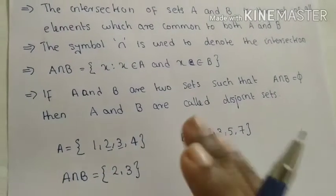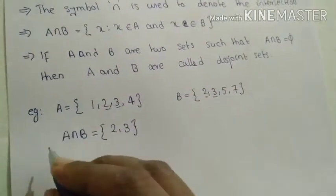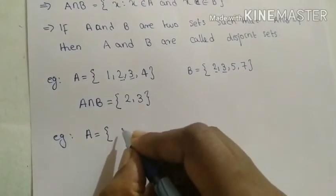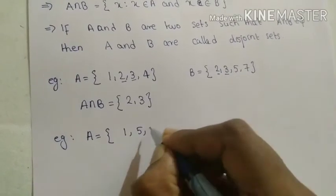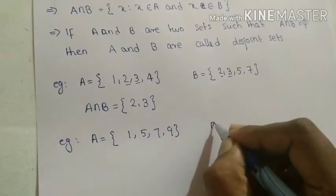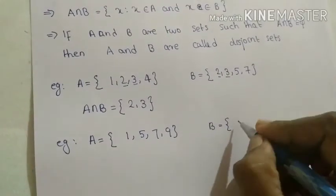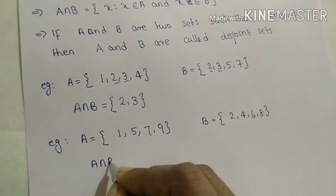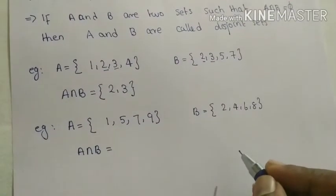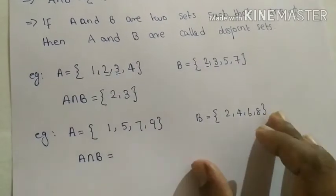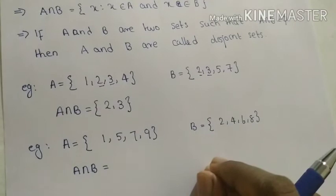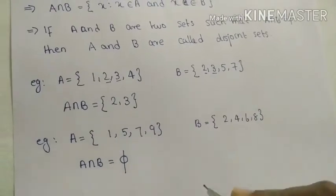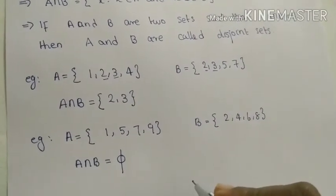That is one example. Now consider another example. Let A equal to {1, 5, 7, 9} and let B equal to the set containing the elements {2, 4, 6, 8}. We need to write A intersection B. If we examine both of these sets, no elements are common. That means A intersection B is equal to the null set.